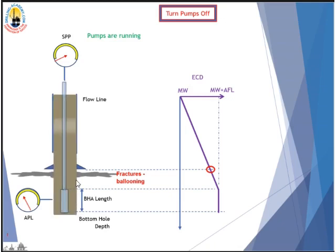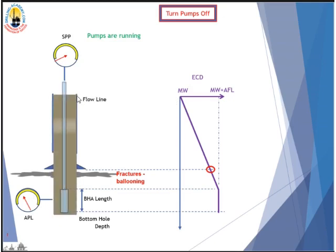This AFL charges up the fractures in the wellbore, and mud is locked into those fractures. Imagine we install a pressure gauge on the BHA in the annulus — we will see this pressure gauge go up. In other words, the fracture is taking mud. And ECD increases from the flow line here.